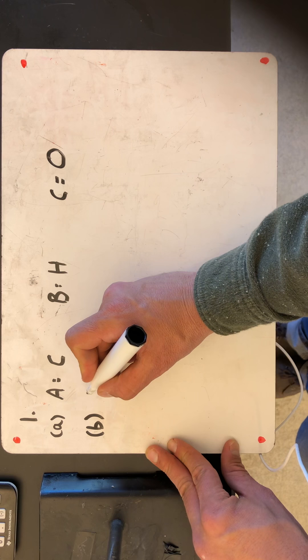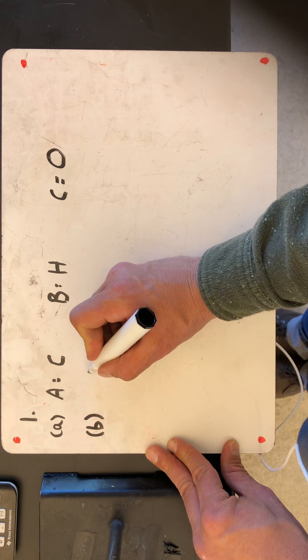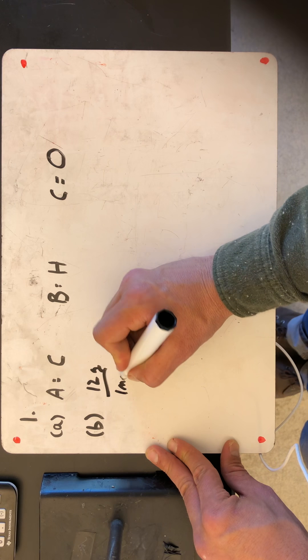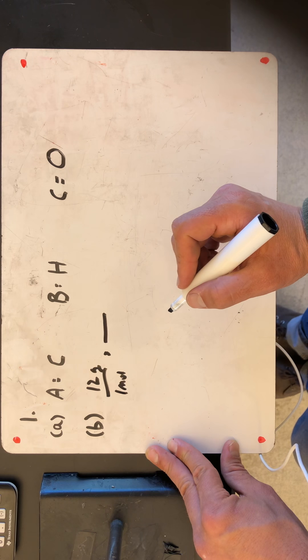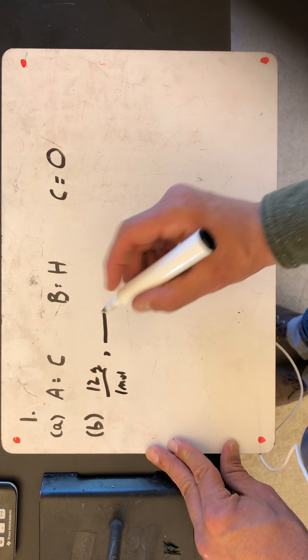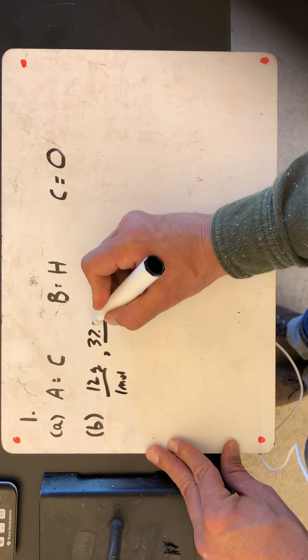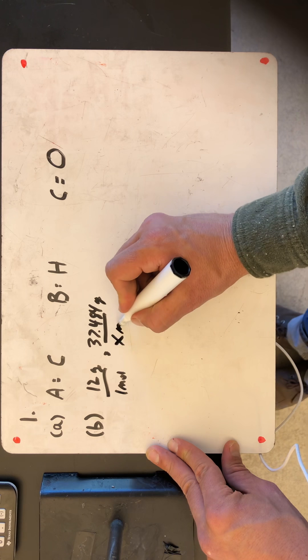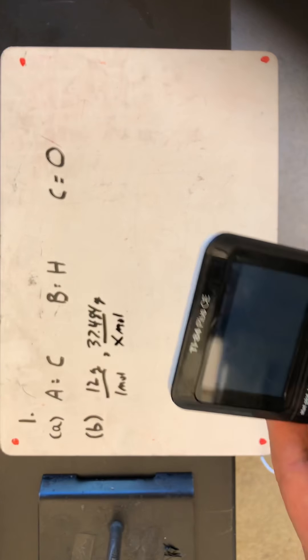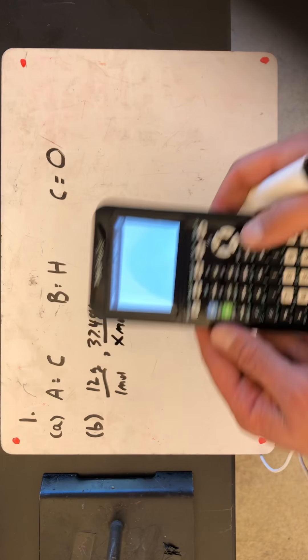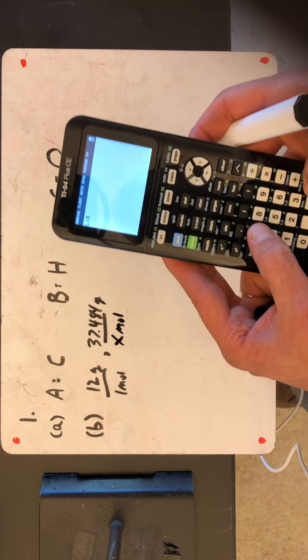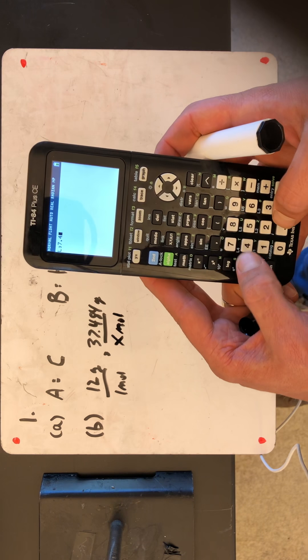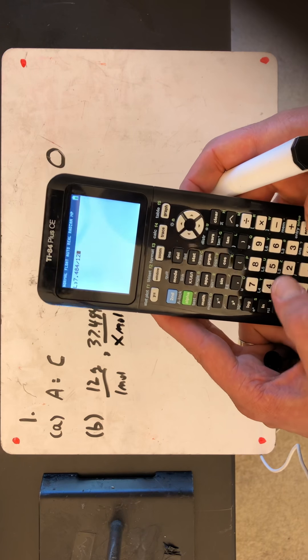So let's go ahead and convert the first one to moles. In this case, we have carbon. We know that carbon is 12 grams per every one mole. And in this case, we have a percentage of 37.484 grams per every x moles. So I'm gonna get out my calculator here, and I'm gonna cross-multiply.